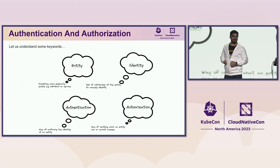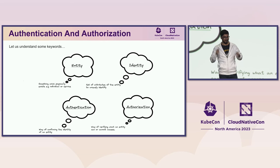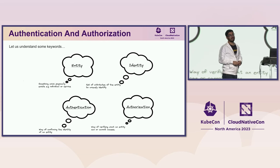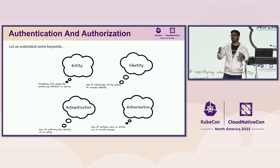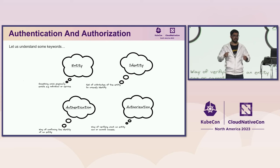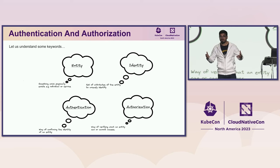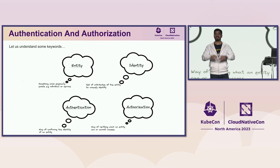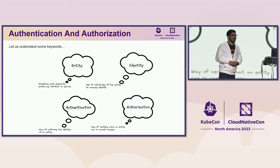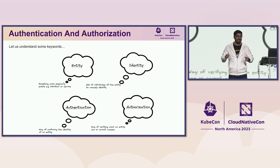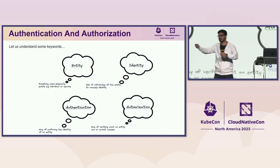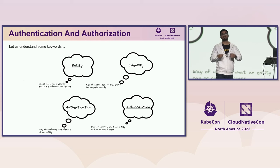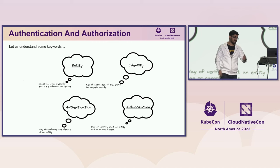Let's get into some basics and debunk some jargon. An entity is something individual — it could be an individual or a service. Identity is a set of attributes that can help you identify these entities. Authentication is a way of proving the identity to someone. And authorization tells you what set of actions an entity can take.